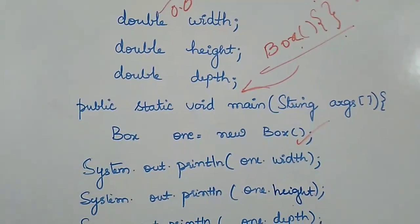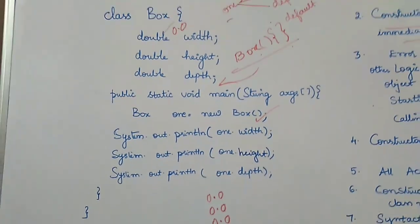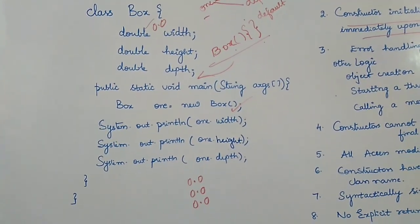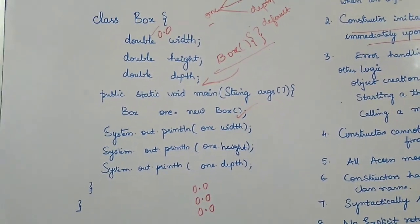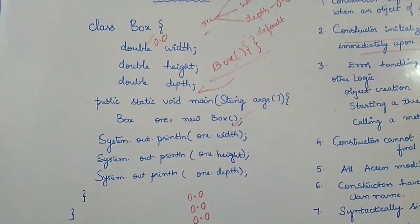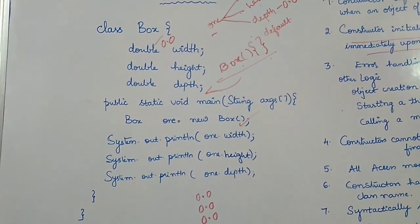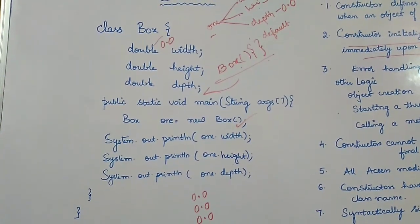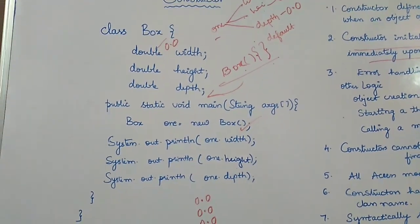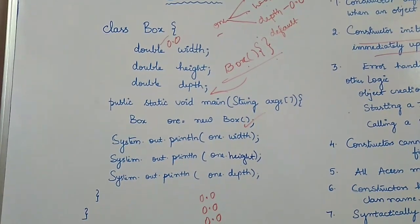Instance variables are initialized right when the constructor is called — whether you mention a constructor or not. If you don't mention one, the compiler will add it. But the point is, in a real program you would not want all objects to have the same default values. You would like to assign specific values to width, height, and depth. For that reason, most programs will have explicit constructors declared by the programmer. It will be very rare to see a default constructor used in practice.